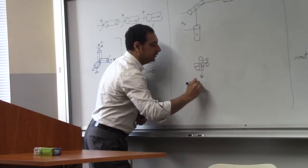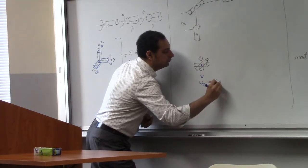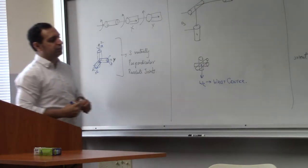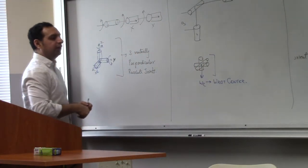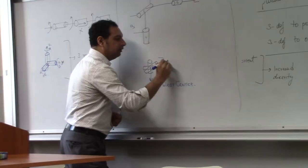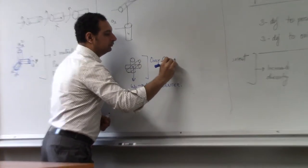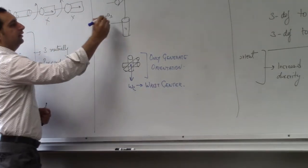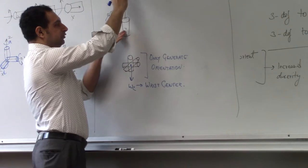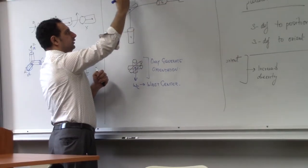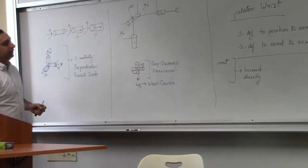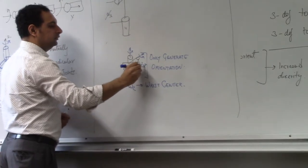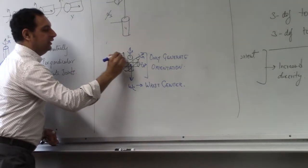We don't need more displacement because this is the fourth, fifth, and sixth joint — you already have three joints before this taking care of displacement. So what we do is align the three joints along one center — all three joints will be concentric. They'll be at one point, called the wrist center, WC. You can rotate about this.